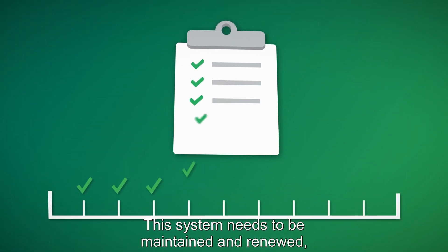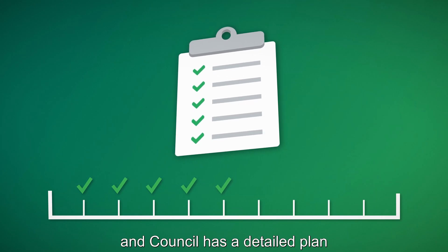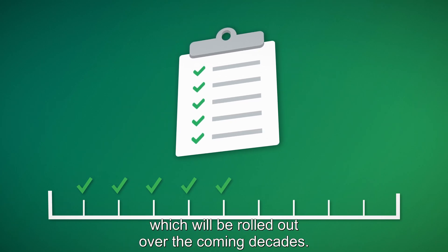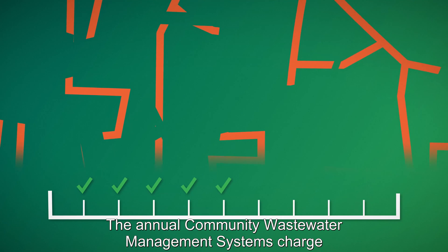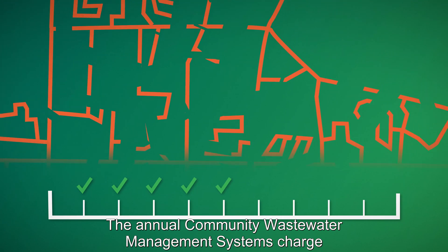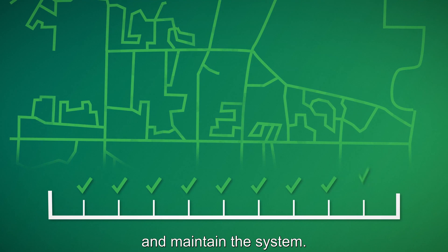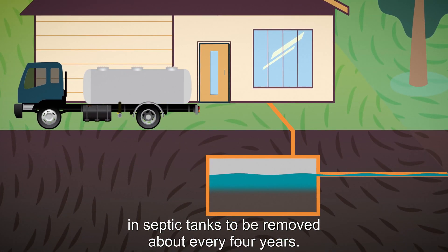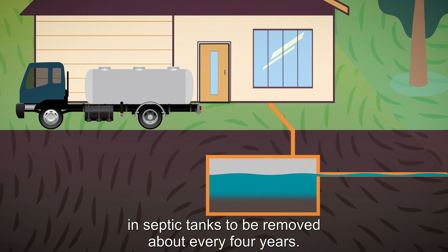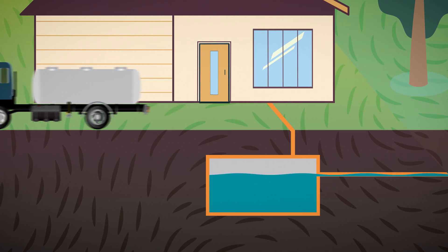The system needs to be maintained and renewed, and council has a detailed plan which will be rolled out over the coming decades. The annual Community Wastewater Management Systems charge collected by council is used to operate and maintain the system. It also pays for the solid material that collects in septic tanks to be removed about every four years.